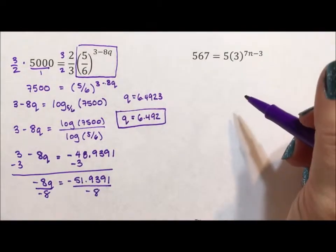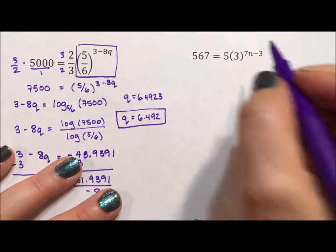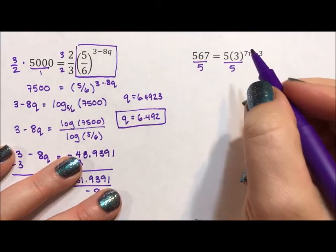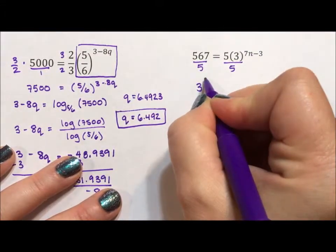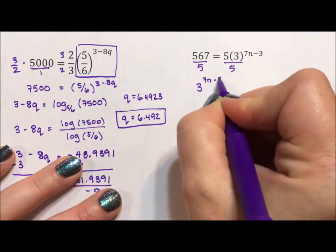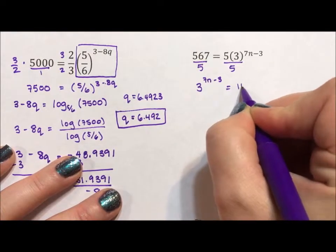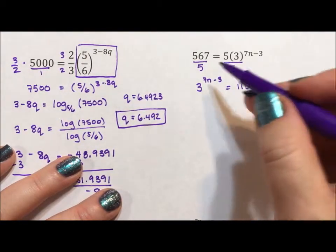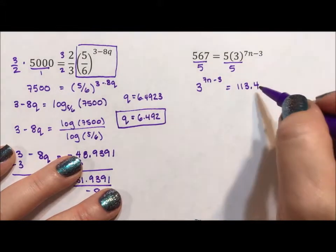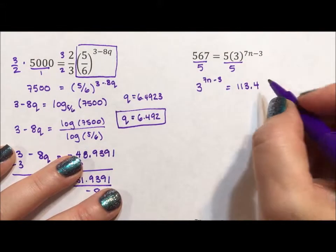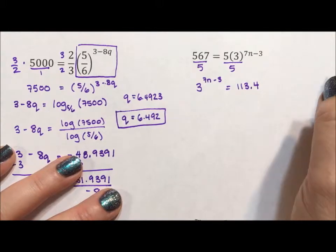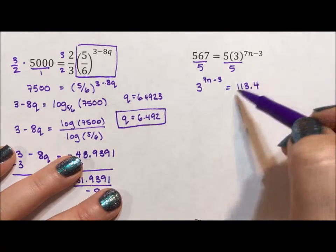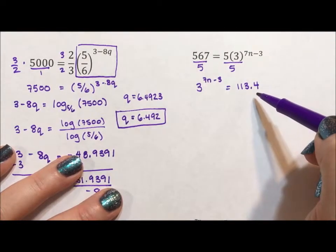All right I promised you another approach for this problem. I am again going to start by dividing by 5 but I'm also going to rewrite it in the other order so I'm going to say 3 to the 7n minus 3 is equal to 113.4. Now if you've seen my other videos I usually leave this as a fraction. The reason I'm going to decimal is because it's terminating. I don't write repeating decimals because that will bring error into the problem but 567 divided by 5 is exactly 113.4. No rounding needed.